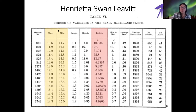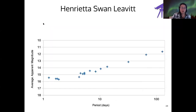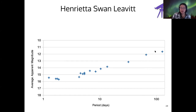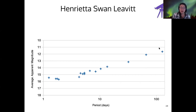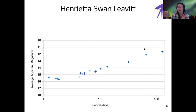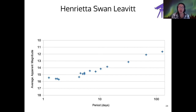What Henrietta was able to do was plot the magnitude of the stars versus their period. As the period of the Cepheid variable star is longer and longer, its apparent magnitude tends to be smaller. In other words, the brighter stars tend to have longer periods in their brightness variations — they are more slowly varying the brighter they are.